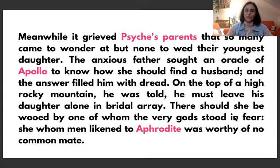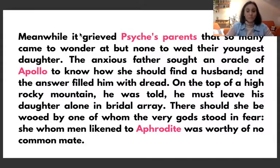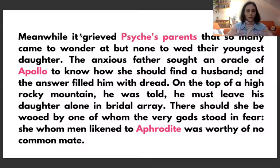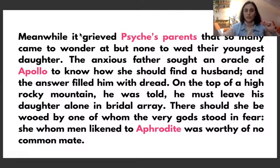On the top of a high rocky mountain he was told — note this interesting passive construction — he must leave his daughter alone in bridal array. 'Bridal array' means dressed with all the garments, perfumed and prepared, as if going to a wedding. So she is fully dressed as a bride and left on top of a mountain.